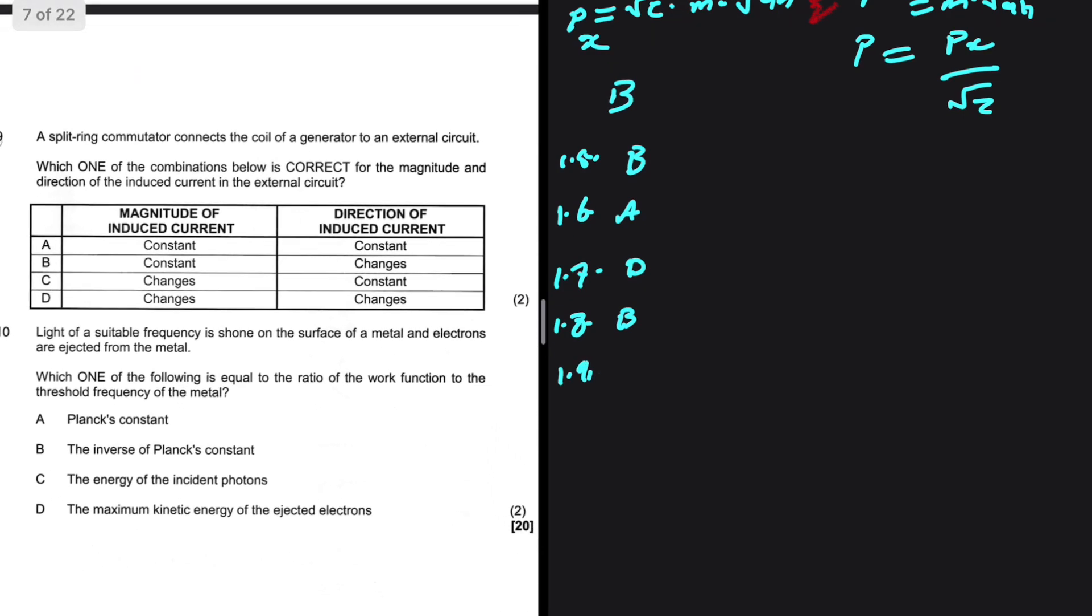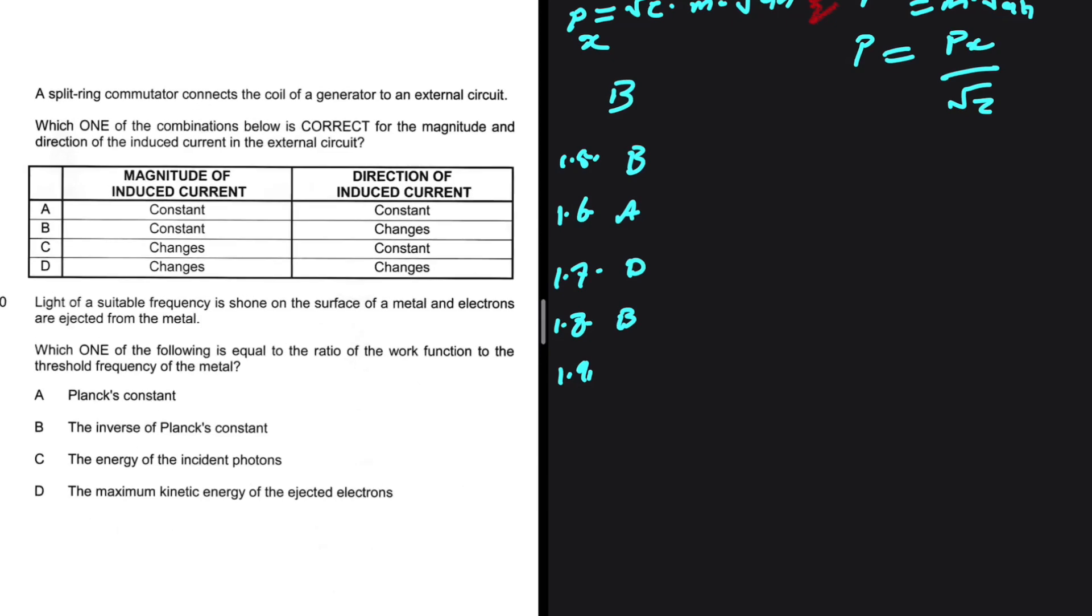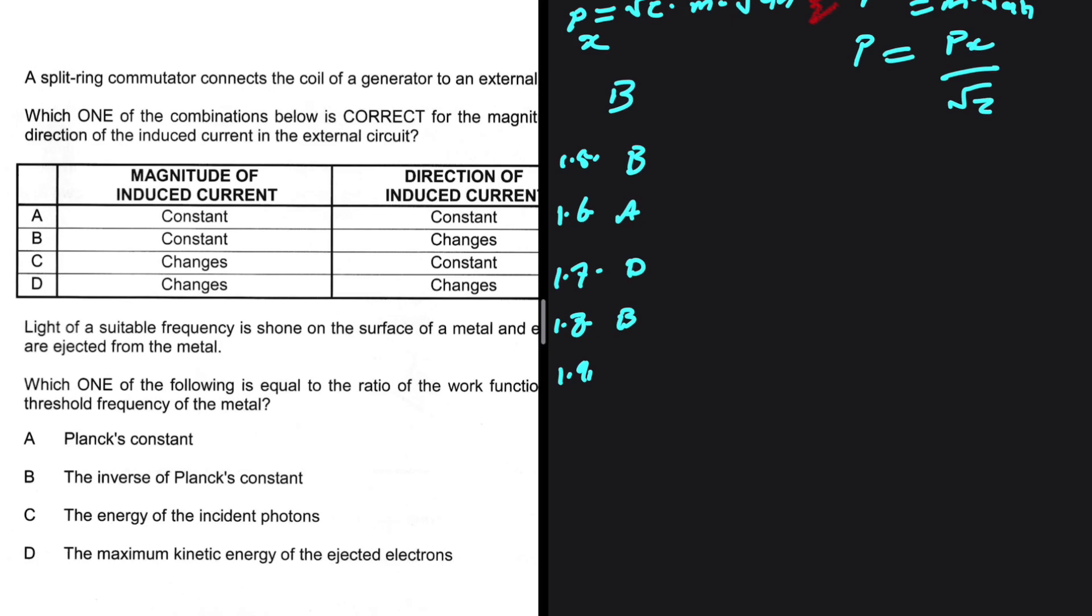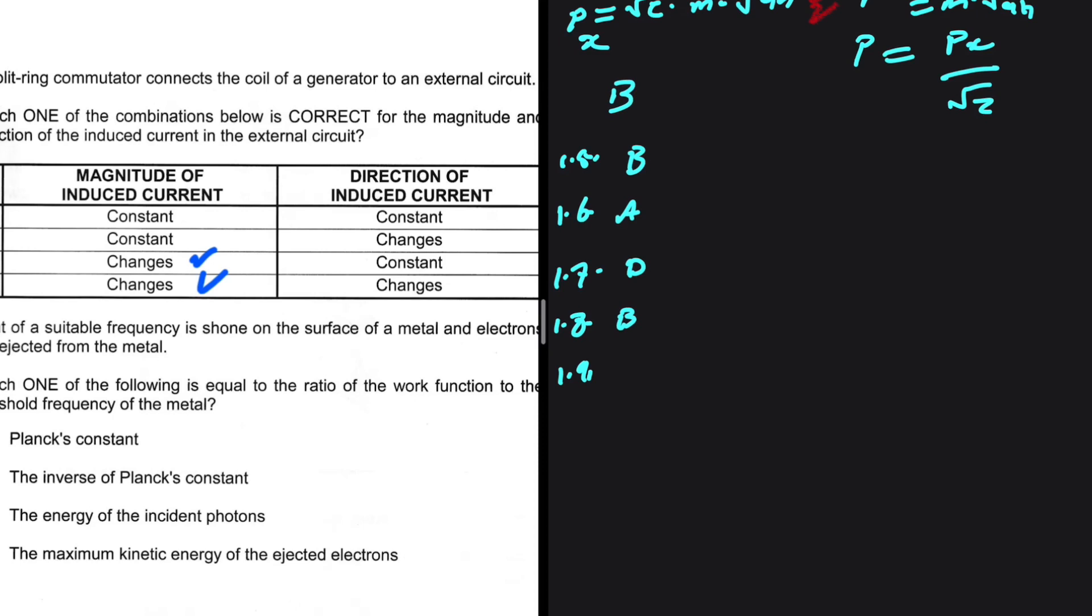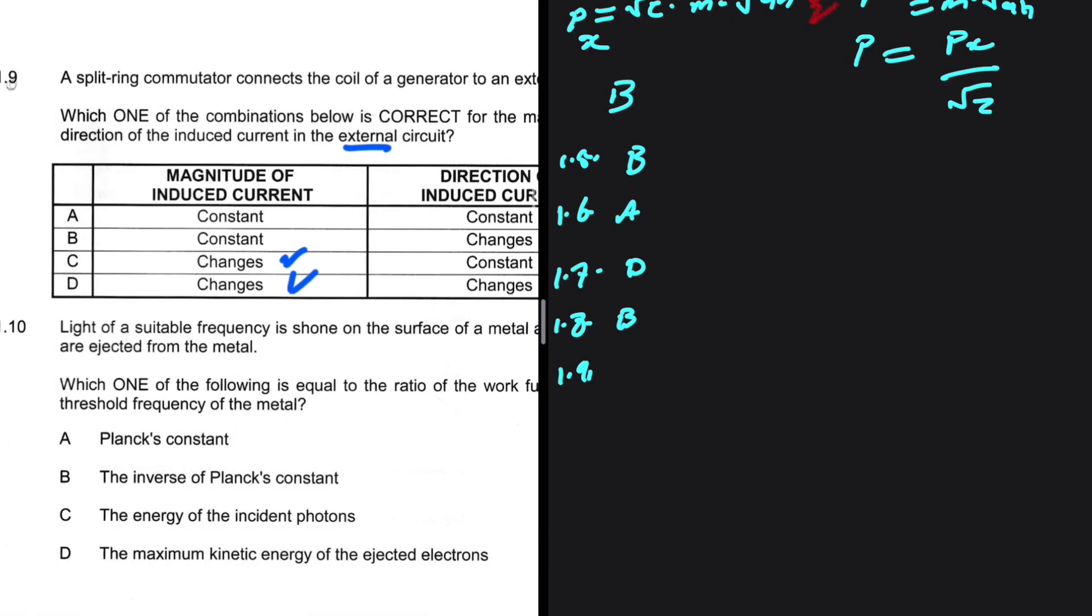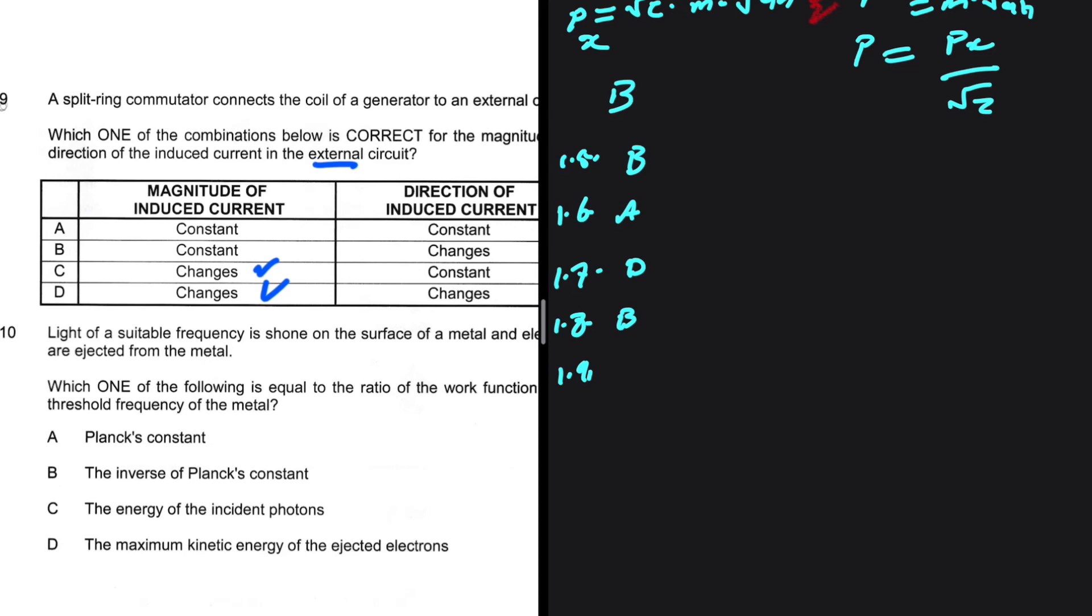1.9: A split ring connects the coil of a generator to an external circuit. Which one of the following combinations below is correct for the magnitude and direction of the induced current in the external circuit? The magnitude of the induced current changes. So we're looking at C and D. You know that we draw a graph where we have I on one side and time on the other side, and it is going up until I max and goes down. So clearly, the current that is induced changes. Now let's talk about the direction of induced current in the external circuit. The direction of the induced current in the external circuit when you have a split ring is constant in the external circuit. That is a key word. In the external circuit, it is constant. So which option satisfies those two conditions? I think it is option C. So the answer to 1.9 is C.